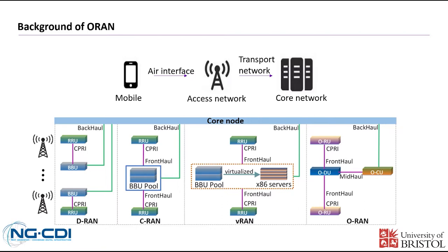RAN architecture went through a profound change in the last two decades — from D-RAN, C-RAN, V-RAN to O-RAN. Although each RAN architecture has its own features, the overall trend is that RAN is decoupling the RF and the baseband unit and virtualizing its functionality to reduce the operation costs of the system.